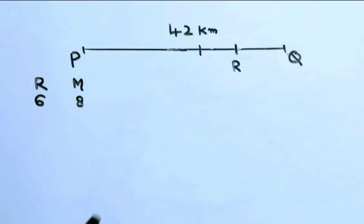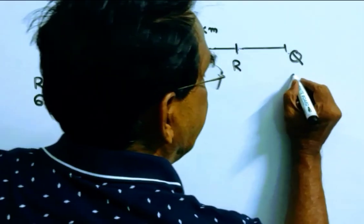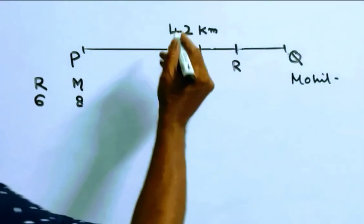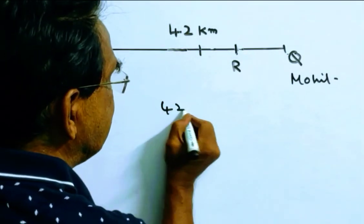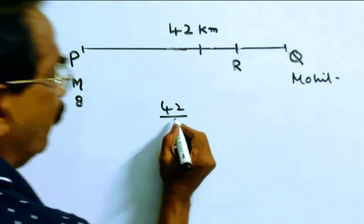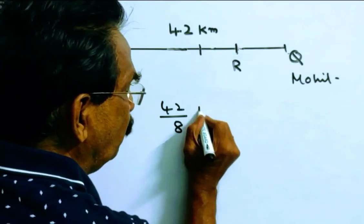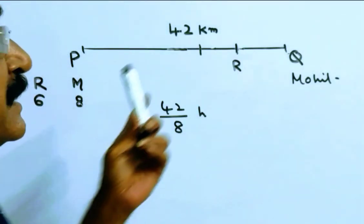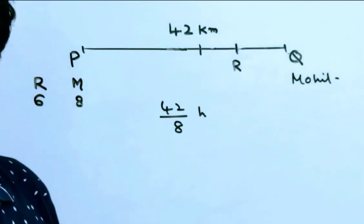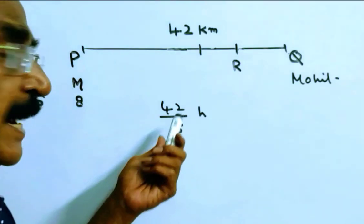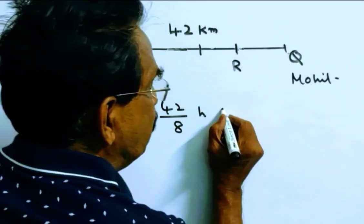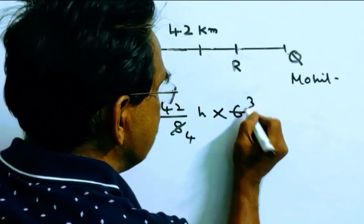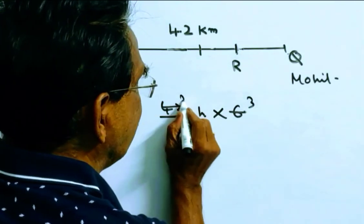Friends, the time taken by Mohit to reach point Q is distance by velocity. This is 42 by 8 hours. This is the time taken by Mohit to reach point Q. Friends, in this time, Rohit traverses 6 times 42 by 8, which simplifies to 63 by 2.